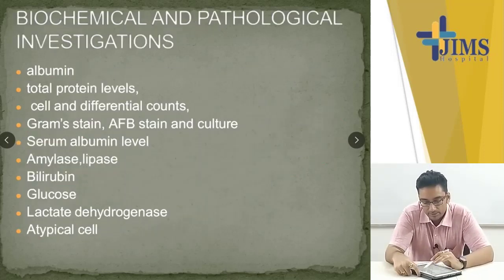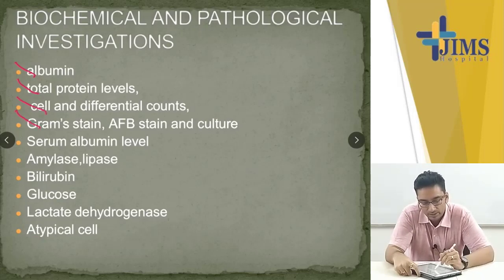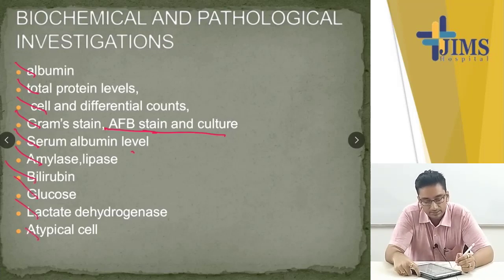Biochemical and pathological investigations of ascitic fluid include: albumin and total protein levels, cell and differential counts, gram stain, AFB stain and culture, serum albumin level, amylase, lipase, bilirubin, glucose, lactate dehydrogenase, and atypical cells.